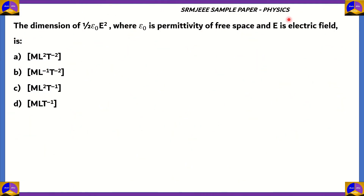The first question is from physics. The dimension of half epsilon naught E squared, where epsilon naught is the permittivity of free space and E is the electric field, is one of the following options: ML²T⁻², ML⁻¹T⁻², ML²T⁻¹, or MLT⁻¹. In the usual way, you would find out the dimensions of the electric field and the permittivity of free space and then use them accordingly.